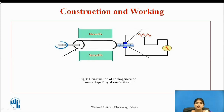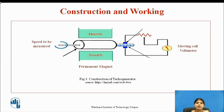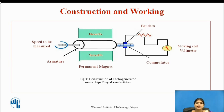The DC tachogenerator consists of a permanent magnet, a moving coil voltmeter, and a shaft for speed measuring — same as the AC tachogenerator, but no rectifier is needed because the output is already in DC form. A series resistance is used to limit the current under output short circuit condition. The polarity of the output voltage indicates the direction of rotation. The commutator collects current from the armature conductors and converts the internally induced AC EMF into DC EMF. Brushes collect current from the commutator and make it available to the external circuitry.